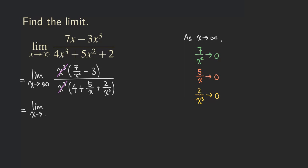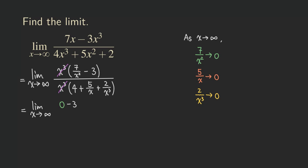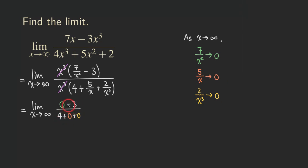Substituting those results, in the numerator we get 0 minus 3, which is negative 3. In the denominator we get 4 plus 0 plus 0, which is 4. So the final answer is negative 3 over 4. As x approaches infinity, this rational function approaches negative 3 over 4.